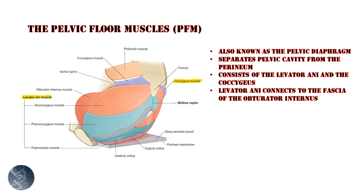The muscles which make up the pelvic floor are the levator ani and the coccygeus. The levator ani makes up the anterior part of the pelvic floor and connects to the fascia of the obturator internus muscle. The levator ani further consists of three muscles: the iliococcygeus, pubococcygeus, and puborectalis.